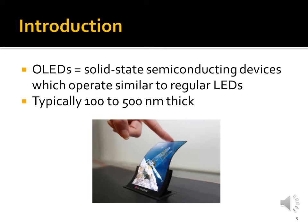We've also seen many times in this class that the construction material — the material that the device is made up of — has a huge impact on how the device actually performs in real life. That is exactly the case with OLEDs. They work the same as regular light emitting diodes, but the fact that they use organic materials affords us a lot of advantages in performance. These devices typically run from 100 to 500 nanometers thick, but the main point is that they operate the same as regular LEDs, just made with, in part, organic materials.